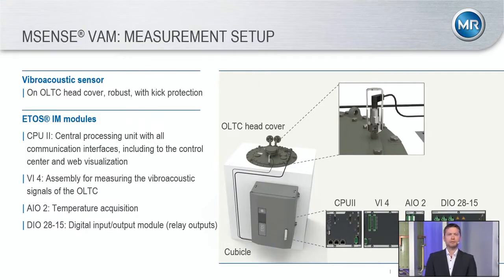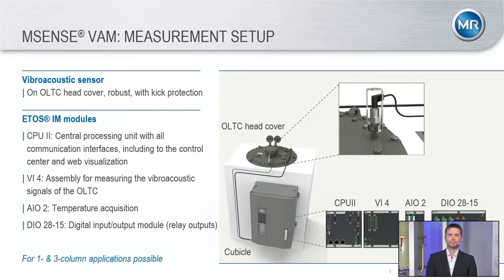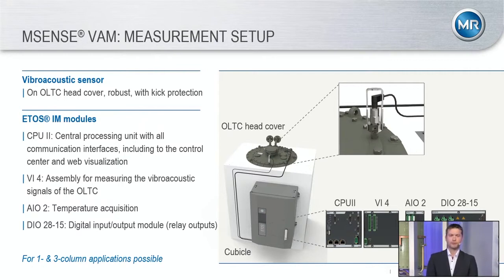The installation for on-bolt tap changers looks a little different. The example shown here is only for our in-tank tap changers, which we produce in Germany. This solution is available for a one-column solution as well as a three-column solution. As an orientation, we say for each motor drive unit we need our own VAM sensor — so for a bench parallel operation, for example, we need three VAM sensors.